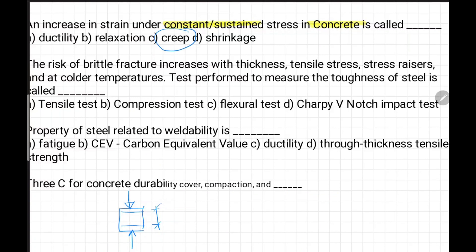The risk of brittle fracture increases with thickness, tensile stress, stress raisers, and colder temperatures. Test performed to measure the toughness of steel is called - if you remember, it is called Charpy V-notch test where we create an artificial groove and we keep a test, we provide an impact of magnitude 27 joules or 40 joules based on the requirement. This is called toughness test of steel.